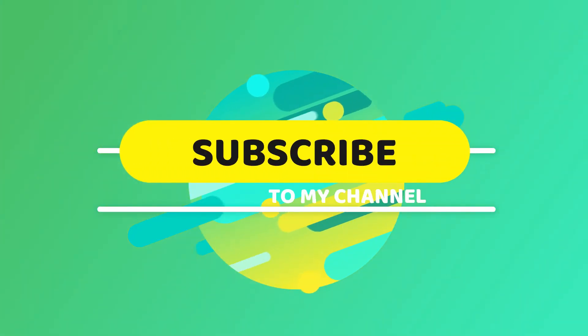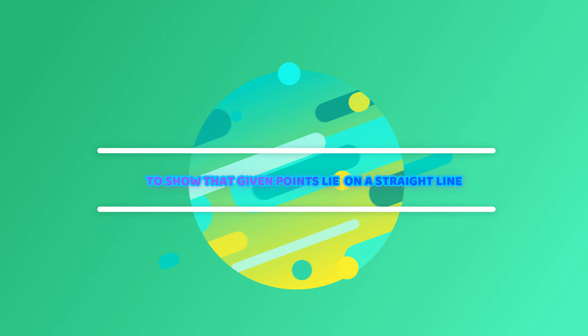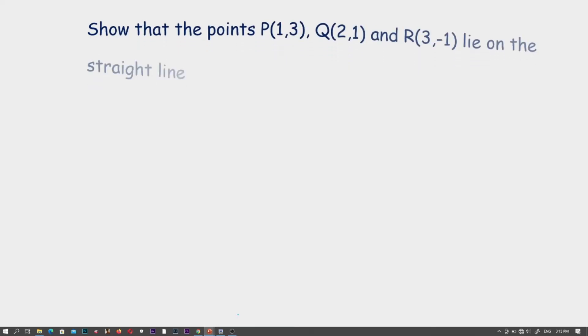I welcome you, my viewer, to this tutorial. Teacher Charles wants to take you through this question. The question states: Show that the points P(1,3), Q(2,1) and R(3,-1) lie on the straight line.